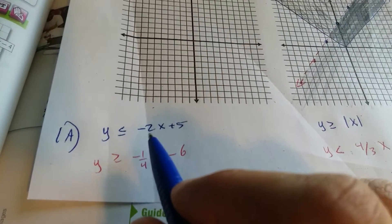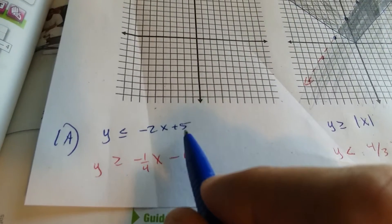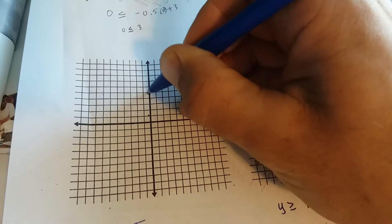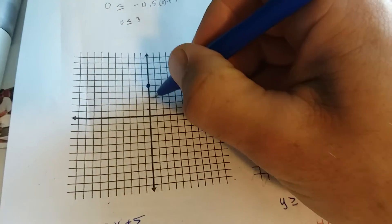y is less than or equal to negative 2x plus 5. Your y-intercept is 5. 1, 2, 3, 4, 5. Your slope is negative 2, so you can go down 2 over 1.